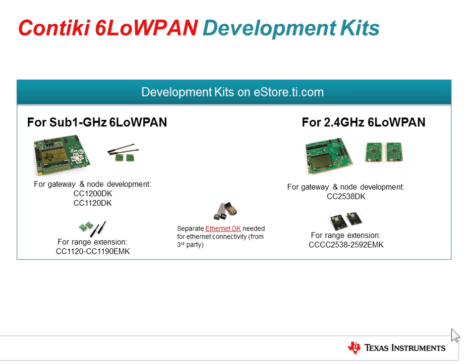TI offers many development kits to help you get started. First, you will need to choose your frequency band — there is a 2.4 GHz option or a sub-1 GHz option. Secondly, depending on your application, whether it's a node or an edge router, you will need to choose the appropriate development tool. Lastly, for range extenders, there is also a kit available for either 2.4 GHz or sub-1 GHz.